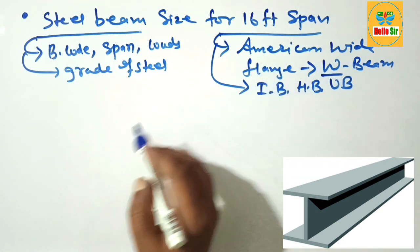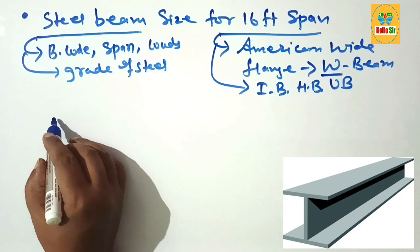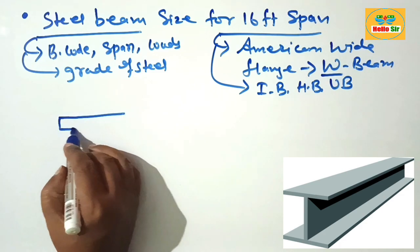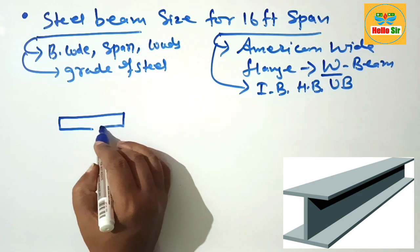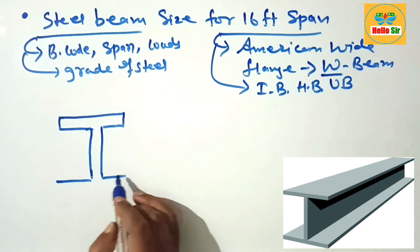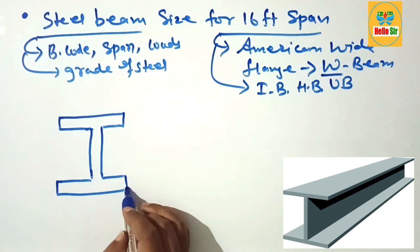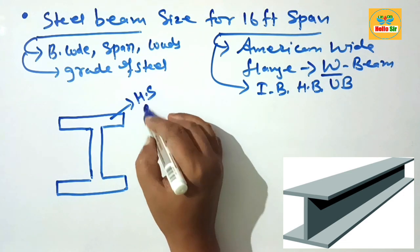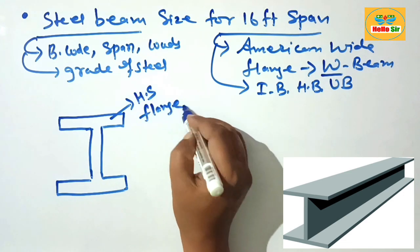First we understand about the W-beam which is American wide flange beam. First we make rough diagram to understand about this. This one is American wide flange beam.